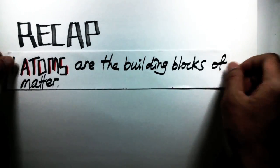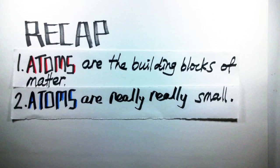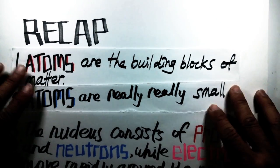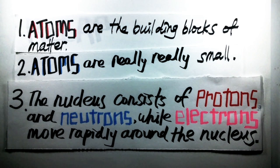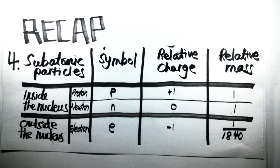Let's now do a quick recap of what we've learned. Atoms are the building blocks of matter. Atoms are really, really small. The nucleus consists of protons and neutrons, while electrons move rapidly around the nucleus. Looking at the subatomic particles: protons have a relative charge of plus 1 and a relative mass of 1. Neutrons have no relative charge at all, but have a relative mass of 1. Electrons have a relative charge of minus 1 and a relative mass of 1 over 1840.